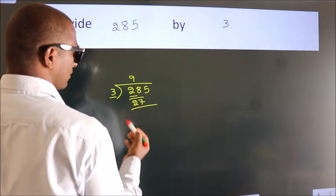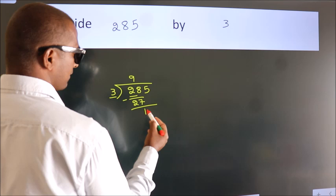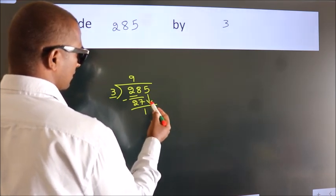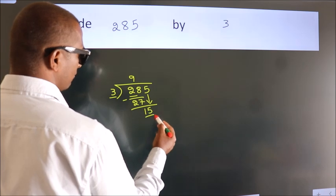Now we should subtract. We get 1. After this, bring down the beside number. So, 5 down. So, 15.